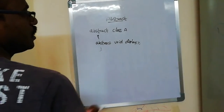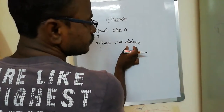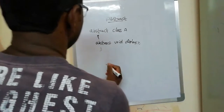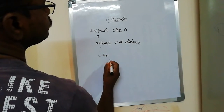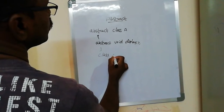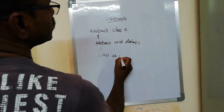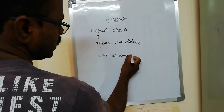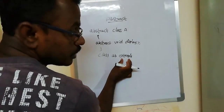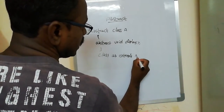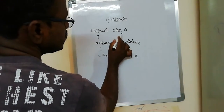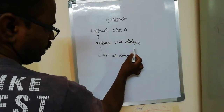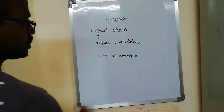We will close the braces. This abstract method can be declared in the extending class of the abstract class. We write another class — for example, class B — extending class A using the keyword 'extends'. Class A is the abstract class. The abstract class contains one abstract method, and that method can be implemented in class B.